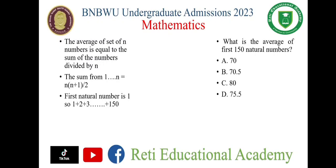We are adding from 1: 1 plus 2 plus 3 up to 150. Using the formula, the sum equals 150 multiplied by 151 divided by 2. For the average, we then divide by the total number of terms, which is 150.